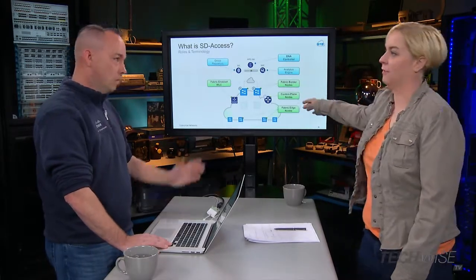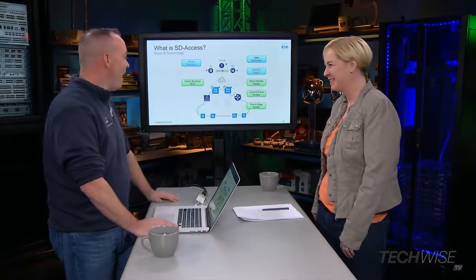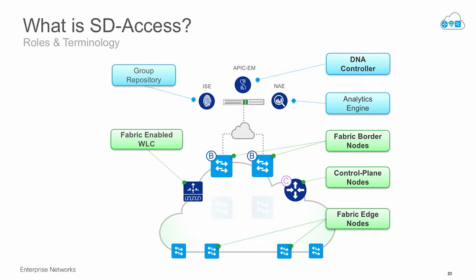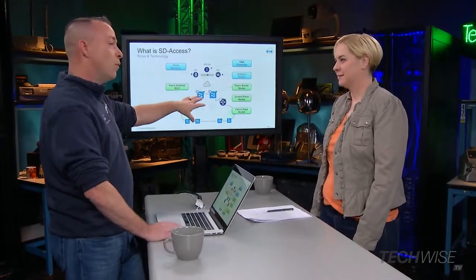The control plane node — that's your LISP map server — keeps track of everything. Next are the border nodes: as the name suggests, they talk inside the fabric and also outside the fabric — the customs officer of the campus fabric. And then the fabric edge nodes — these are your access layer switches where the users actually connect; responsible for doing the identity part. And can't forget wireless. This is one of the new additions to campus fabric. Instead of just doing traditional wireless, we actually integrate the wireless mobility with the control plane, so all the wireless clients get the same capabilities as the wired clients — very important for host mobility.